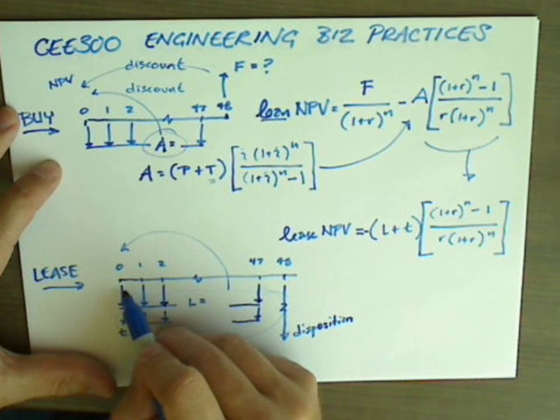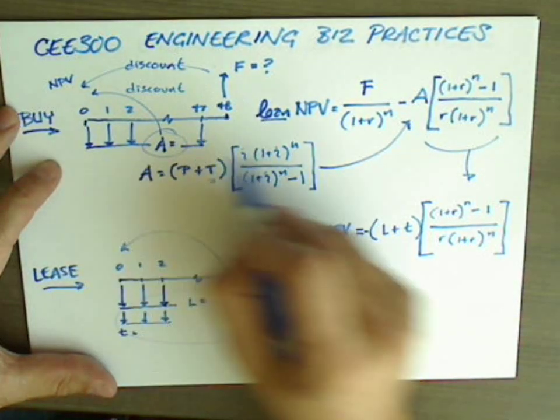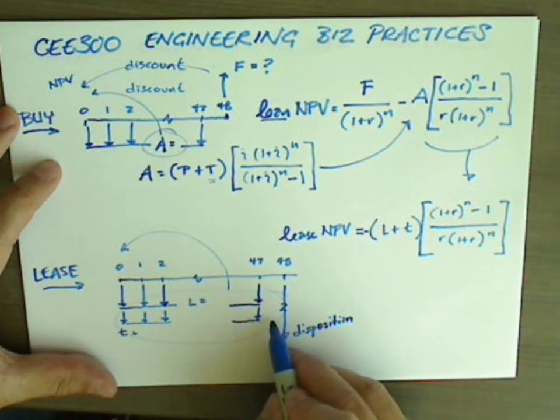So you know that A is greater, the main advantage of leasing is that these monthly payments are lower. So A, your monthly payment with the loan, is greater than L and T.